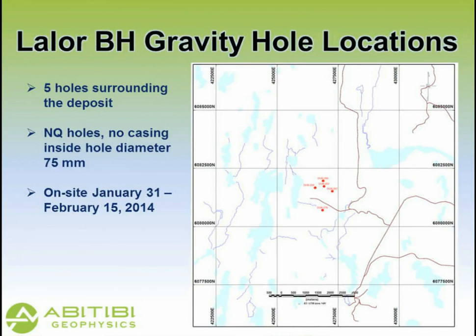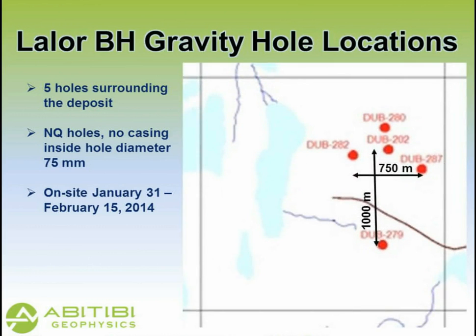On the LALOR survey, we surveyed five holes. To give you an idea of the spread, it was over a thousand metres in the north-south direction and 750 metres in the east-west direction. The holes are around the deposit because all the holes that intersected the deposit had already been cemented in January, so we could not survey any holes closer than this. Ernst might talk about why these specific holes were selected.